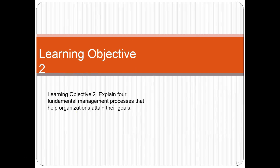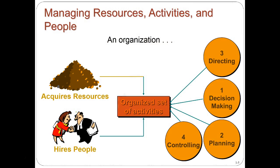Learning objective two: explain four fundamental management processes that help organizations attain their goals. If we break down the business to its basic parts, we have resources — either tangible resources such as raw materials, or intangible such as patents and goodwill. We're going to have people within the organization, and management's goal is to manage these resources and make decisions based on those resources.